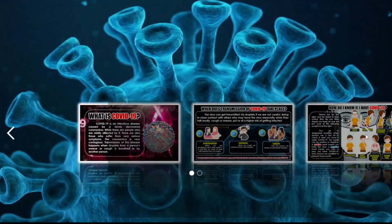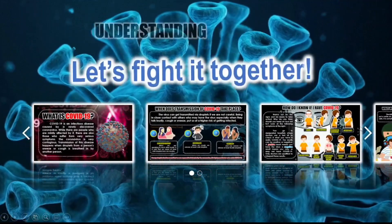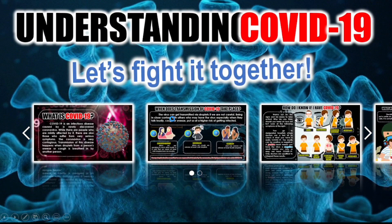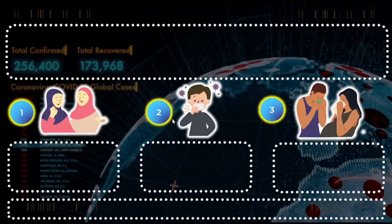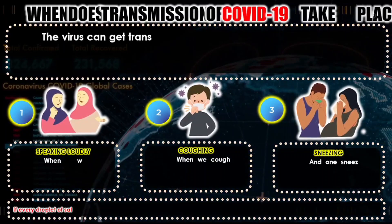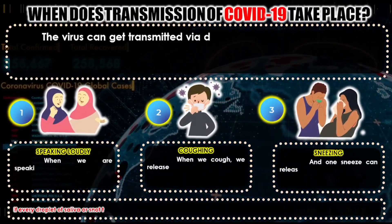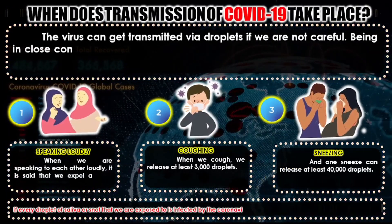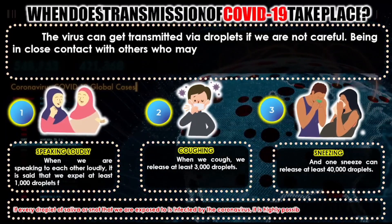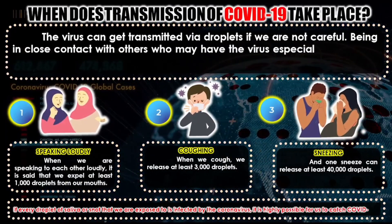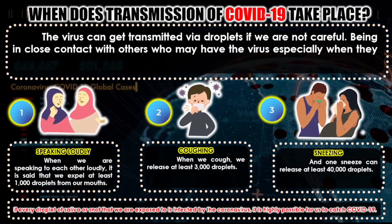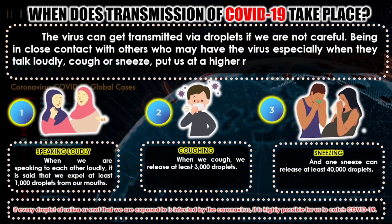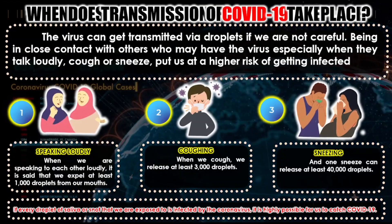Now we'll look at when transmission of COVID-19 takes place. The virus can be transmitted via droplets if we are not careful, so we need to be very extra careful. Being in close contact with others who may have the virus — especially when they talk loudly, cough, or sneeze — puts us at a higher risk of getting infected.